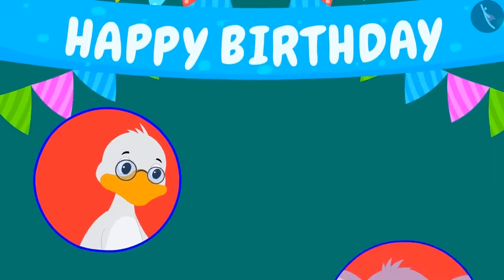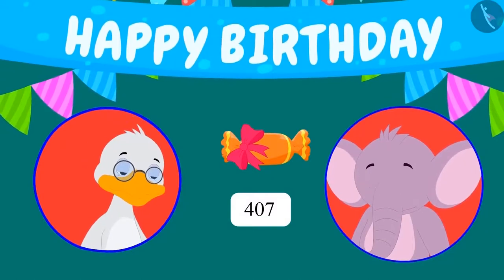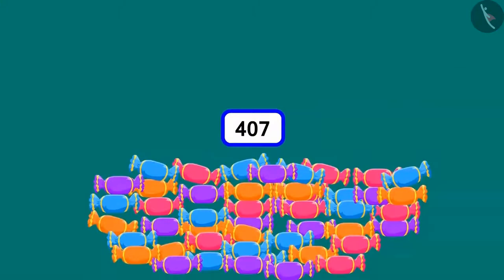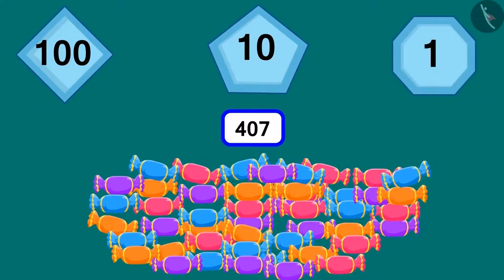But Batak uncle has given 407 toffees to Appu. Can you write the number of these toffees in the tokens of 100, 10, and one? Let's write it together.